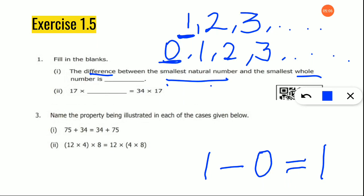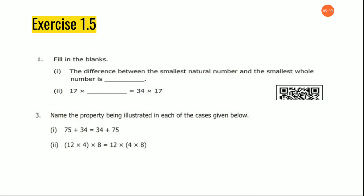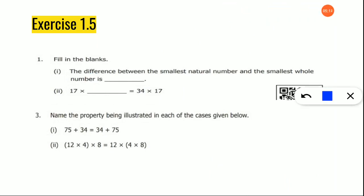Now: 17 times blank equals 34 times 17. When there are two numbers involved, commutative property is used — we are going to exchange. Keep in mind: when two values are involved, use commutative property; when three values are involved, use associative property. Here 17 and 34 are on the right hand side and 17 is already on the left side. The places are exchanged, so the answer should be 34.